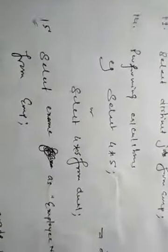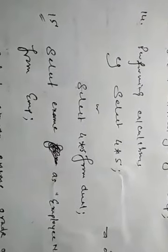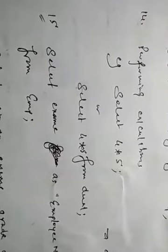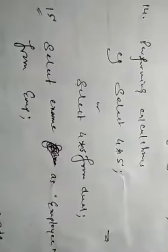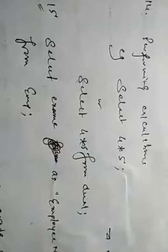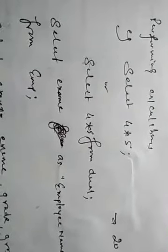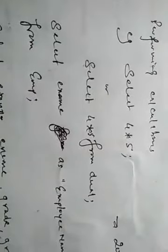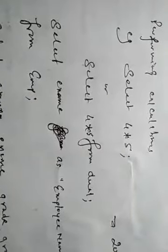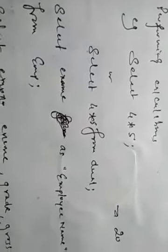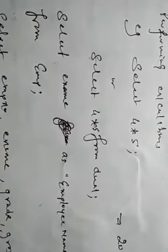If we want to perform calculations in SQL, we write SELECT and whatever we want to calculate — for example, SELECT 4 * 5 gives us 20. We can also write SELECT 4 * 5 FROM dual. DUAL is a built-in table that contains only one column and one row.